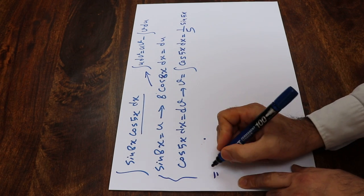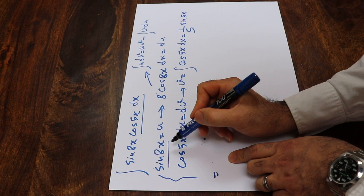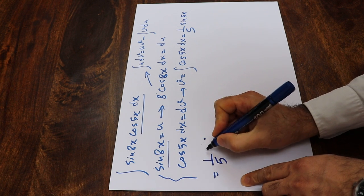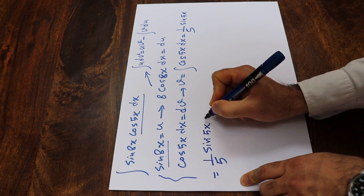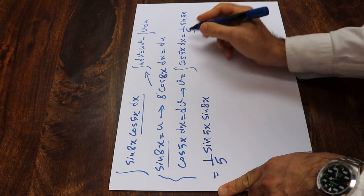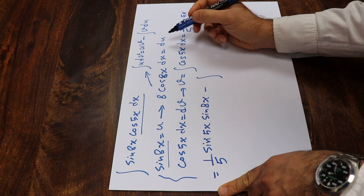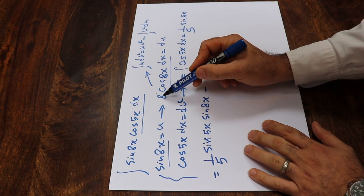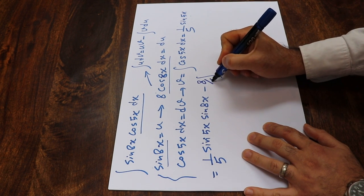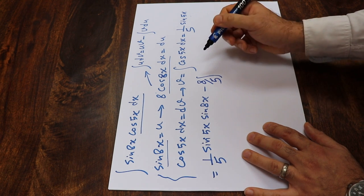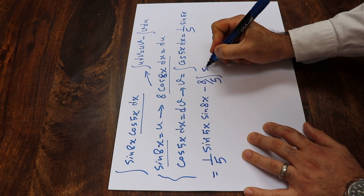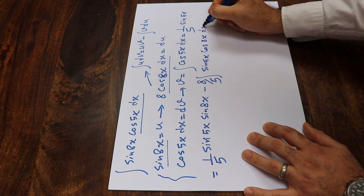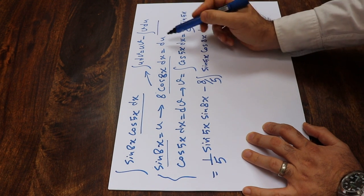Now you need to substitute these expressions into the formula. If you do that, you can rewrite this integral as u times v: u is sine 8x, v is 1 divided by 5 times sine 5x. So you can write 1 divided by 5 times sine 5x times sine 8x, that is u·v, minus the integral of v du. So v is this one, u is this, and du is this term.